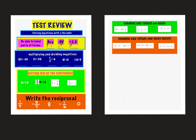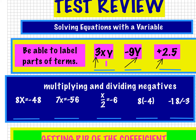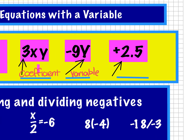All right, guys, here's the test review for tomorrow. I'll go over all these really quickly. You should be able to label what these are. The first number in a variable term is called the coefficient. The letter in a term is called the variable. And a term by itself is called a constant, because it does not ever change.